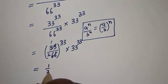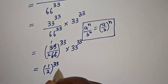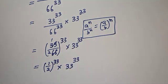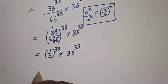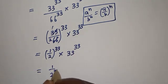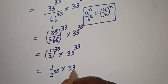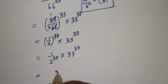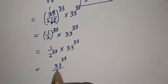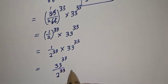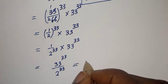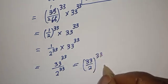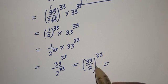Equal to 1 over 2 raised to power 33, multiplied by 33 raised to power 33. And this is the same thing as 33 raised to power 33 over 2 raised to power 33. And this is equal to 33 over 2 to the power of 33. This is equal to 33 divided by 2.